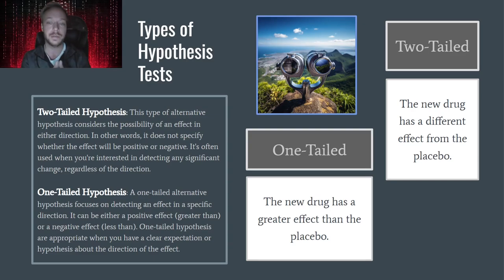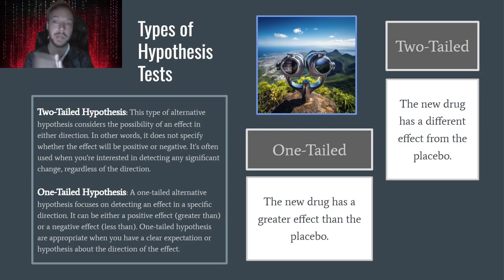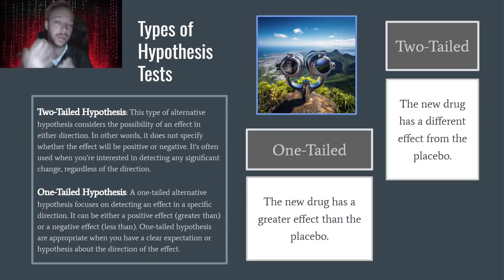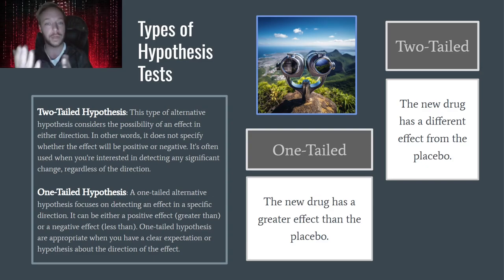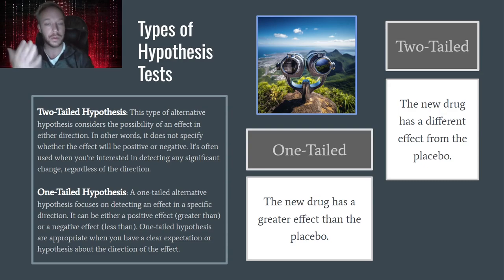For example: 'the new drug has a greater effect than the placebo' uses the greater than symbol — that's a one-tailed test. Or 'the new drug has a different effect from the placebo' — that's a two-tailed test. Really depending on what your problem is, you can define either one, and that will give you insight into which one you're going to use. Fairly simple concept, but just something to be aware of.